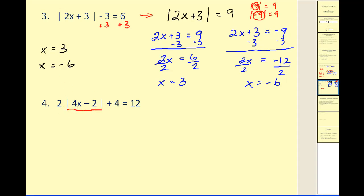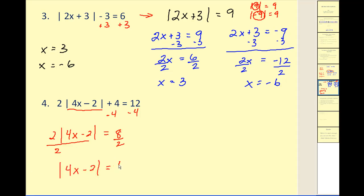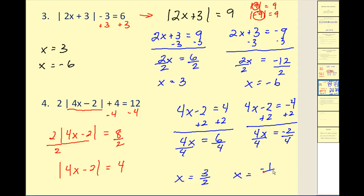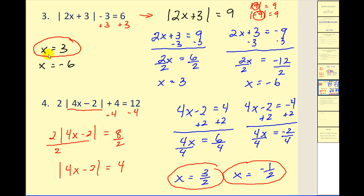For number four, we must isolate the absolute value piece first. We subtract four from both sides, giving twelve minus four equals eight. Then since it is connected by multiplication, we divide both sides by positive two, giving us the absolute value of four x minus two equals positive four. Our two linear equations are four x minus two equals positive four, and four x minus two equals negative four. Adding two to both sides of the first gives four x equals six, so x equals three halves. For the second, adding two gives negative two, then dividing by four gives x equals negative one half. As expected, we have two solutions. We can expect two solutions to most absolute value equations, unless the absolute value equals a negative number — giving no solutions — or equals zero, giving one solution.